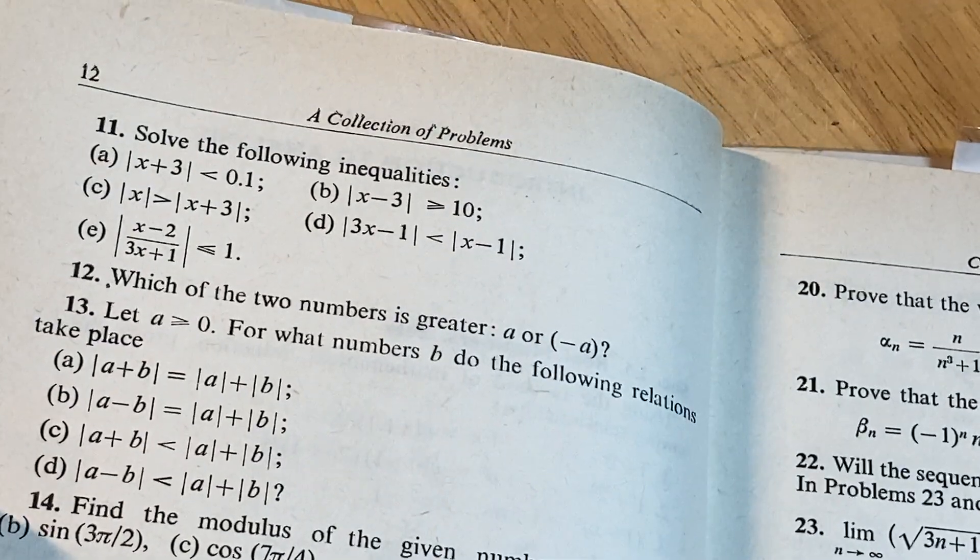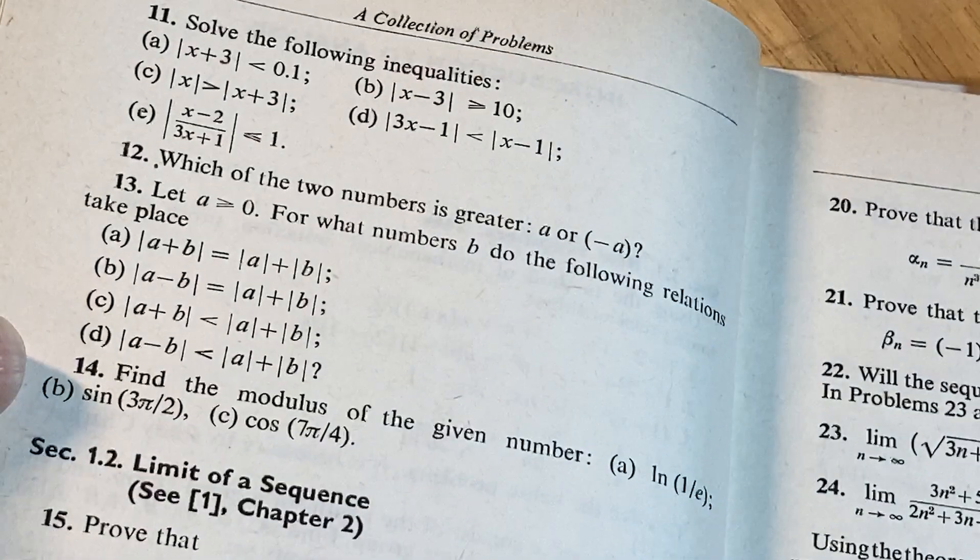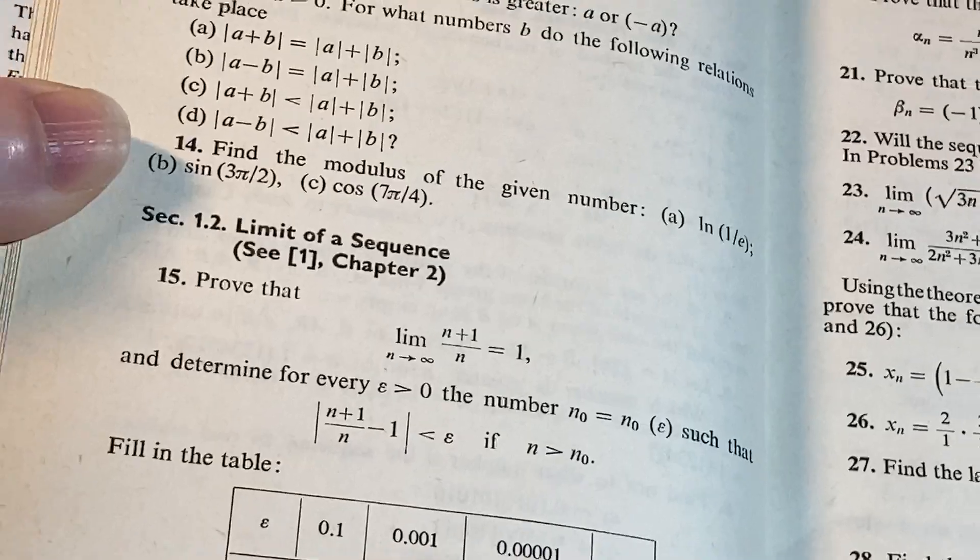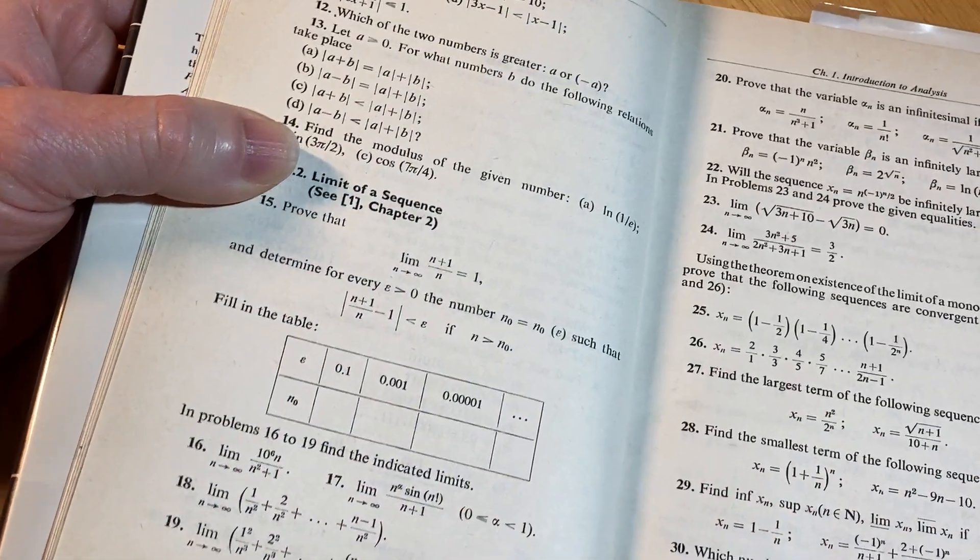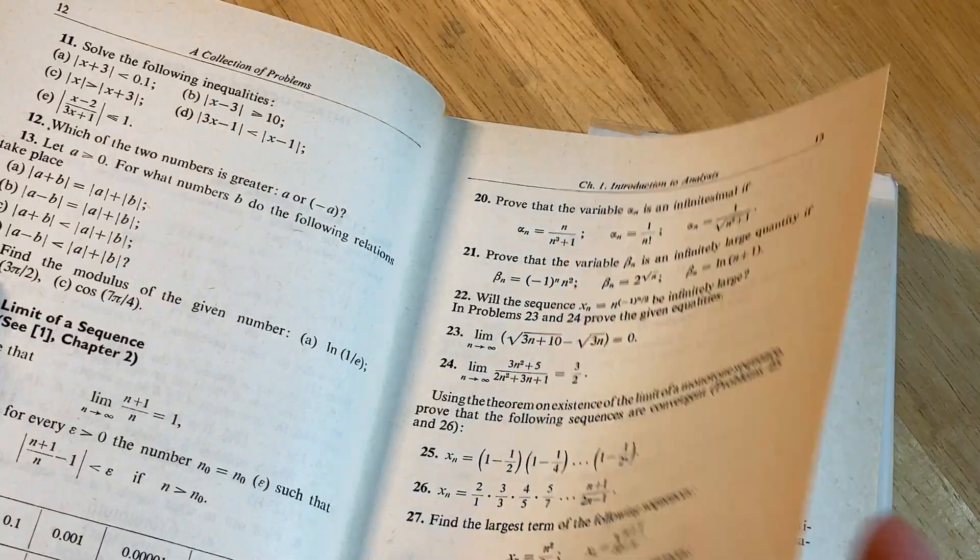Some inequalities. Some of these are pretty easy. Nothing too hard. I mean, they're not crazy. And then we have some other inequalities here. Then sequences. Pretty easy proof. So it's doable. It's not like insane problems or anything. It's just a problem book. It's just a problem book on analysis.